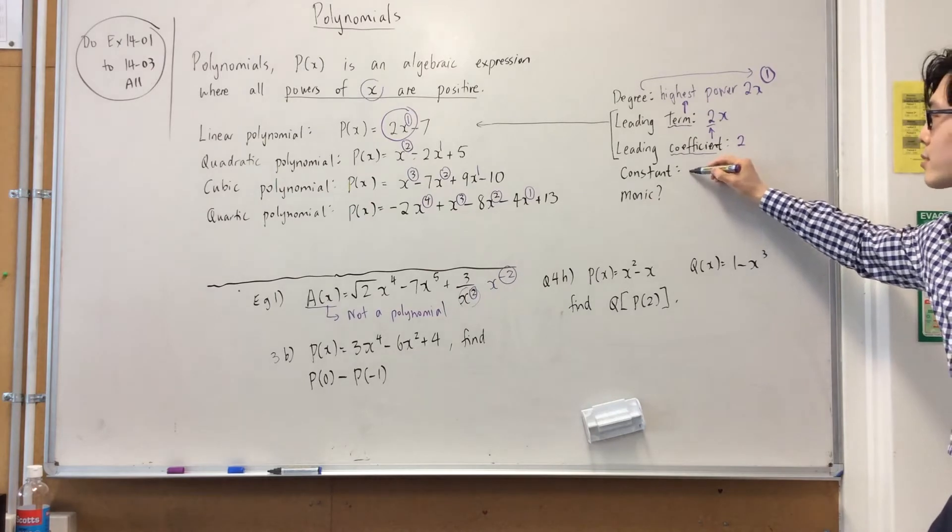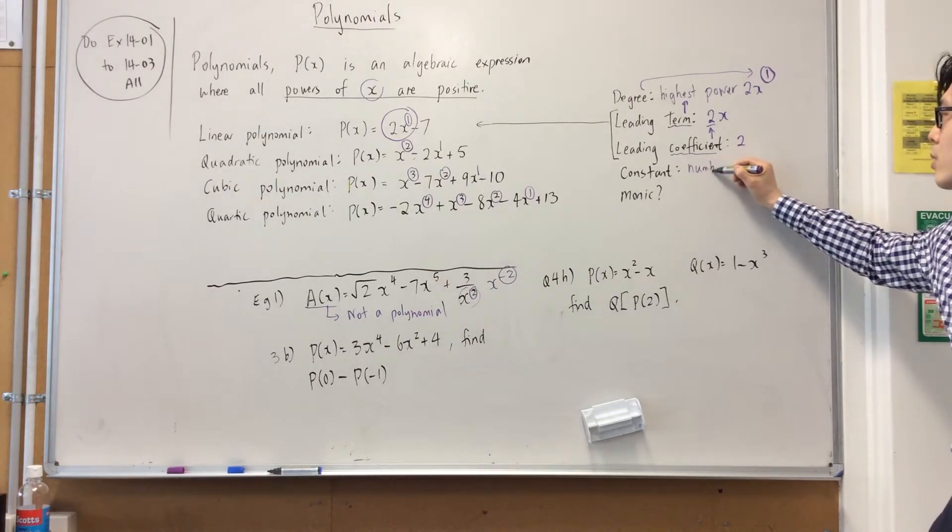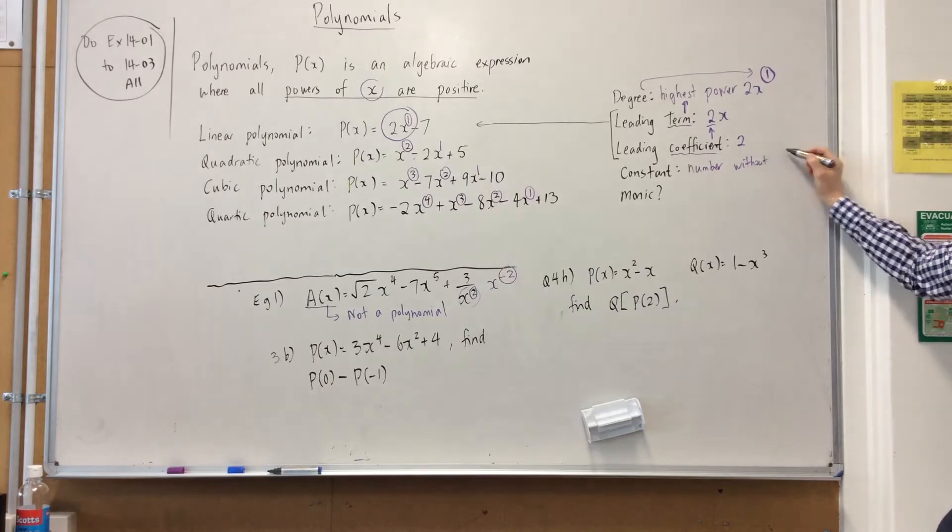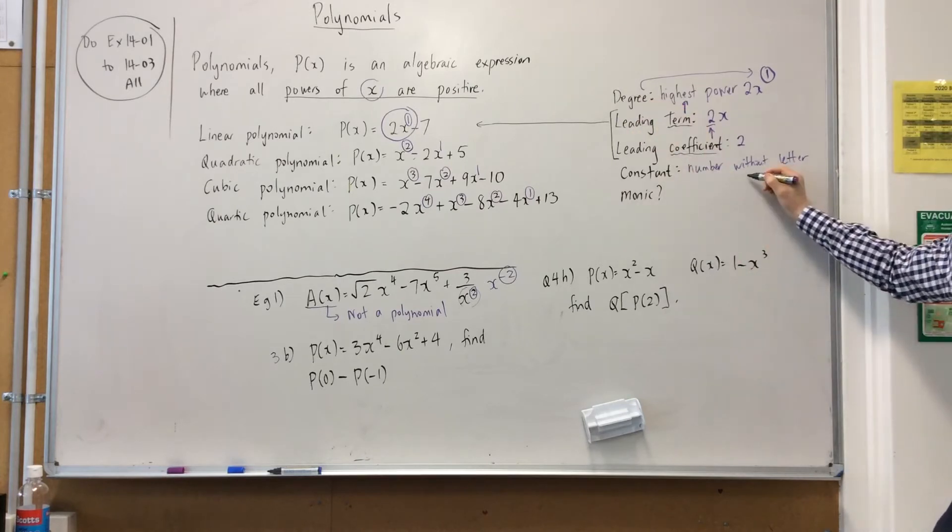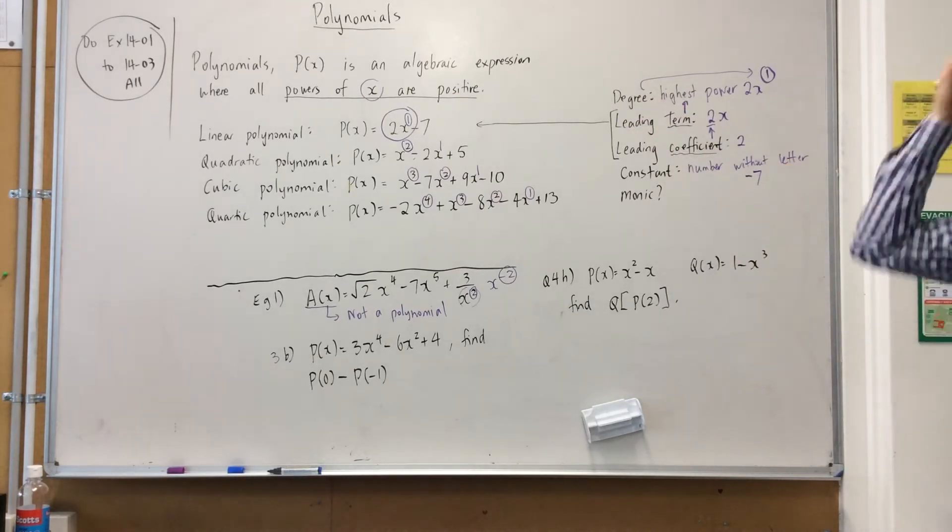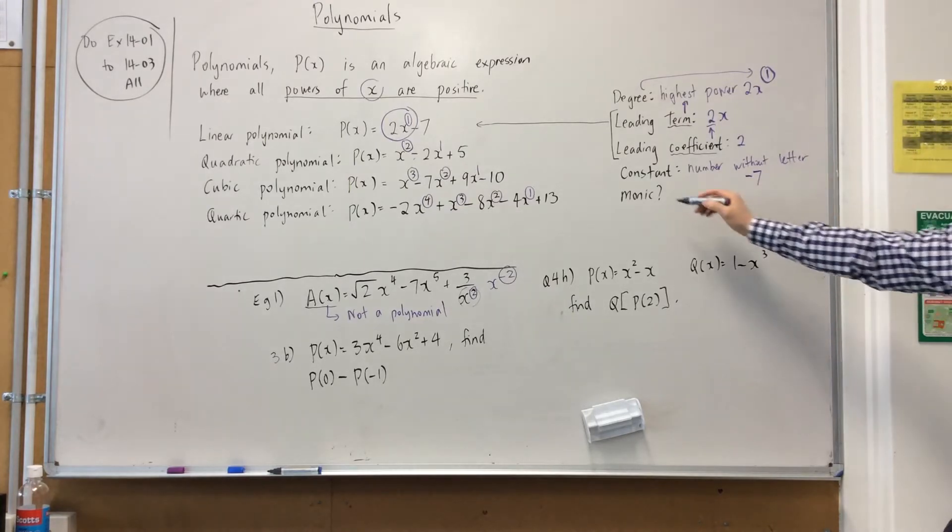Now, constant is number without letter or pre-numeral. What's the number without letter here? Minus seven. No. Minus seven. You have to put the minus. Minus seven. Yeah?